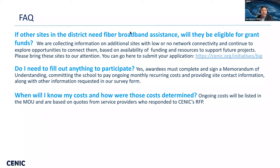We are actively looking to provide services for schools that need fiber-based broadband assistance. If you know any sites with low or no network connectivity, please let us know — you can go to the link in the chat to submit your application. To participate in the grant, you only need to sign an MOU and take our BIG survey. The monthly service fee will be listed in the MOU, and the rate is provided by the carrier that bid on the RFP.